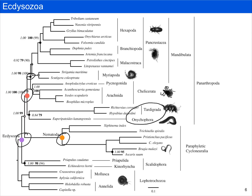We're going to focus on a few specific groups: the chelicerates, the myriapods, the malacostracans, and the hexapods.